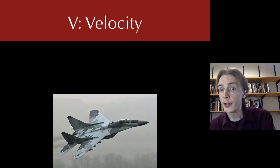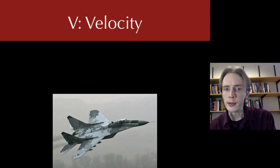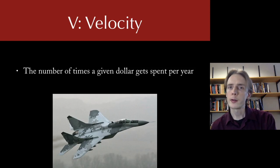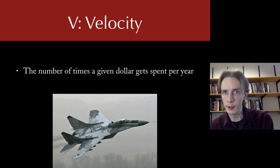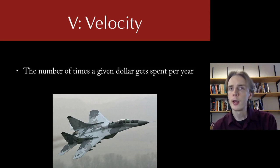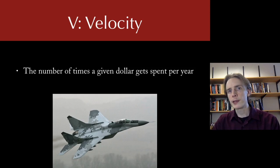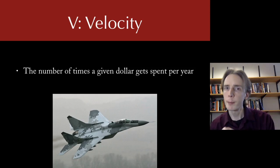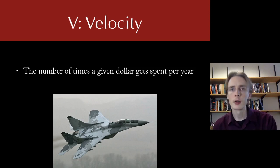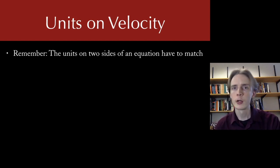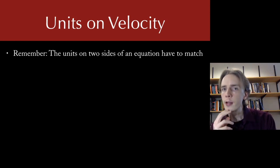The last variable in MV equals Py is velocity of money — V. Velocity measures the number of times a dollar gets spent in a year. I spend a dollar at the grocery store; the store uses it to pay its cashier; the cashier uses it to get a haircut; the barber uses it to pay his telephone bill. Every time that dollar gets spent, it's somebody else's income. The number of times that happens in a year is our velocity of money. And any time we have an equation, the units on both sides have to match.